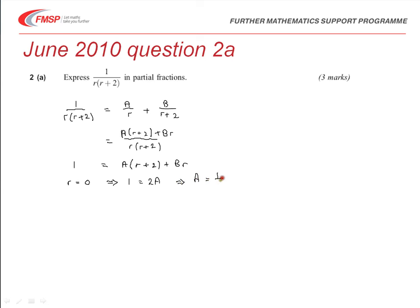Similarly to make the other bracket 0, we can choose r as negative 2.